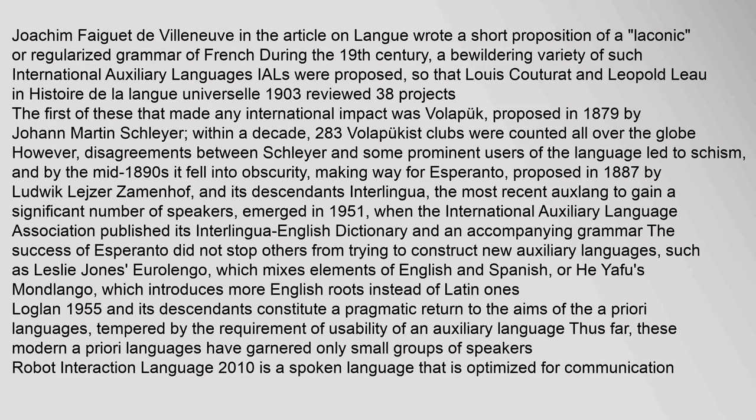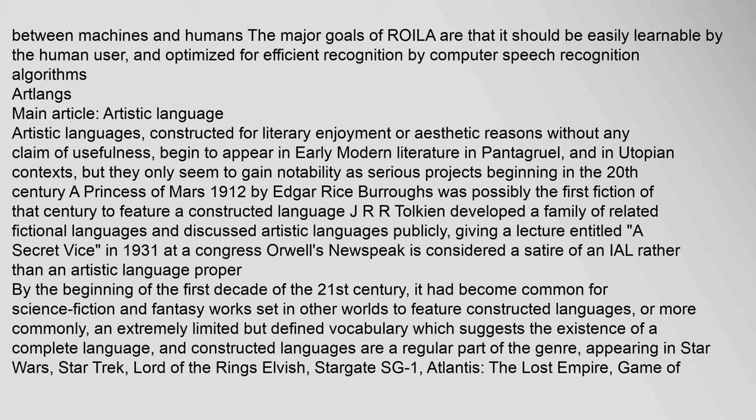The success of Esperanto did not stop others from trying to construct new auxiliary languages, such as Leslie Jones' Eurolango, which mixes elements of English and Spanish, or Mondlango, which introduces more English roots. Loglan (1955) and its descendants constitute a pragmatic return to the aims of the a priori languages, tempered by the requirement of usability. Robot Interaction Language (ROILA, 2010) is a spoken language optimized for communication between machines and humans, designed to be easily learnable by humans and optimized for computer speech recognition algorithms.